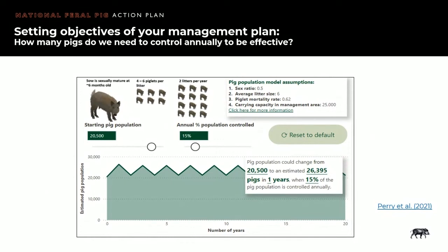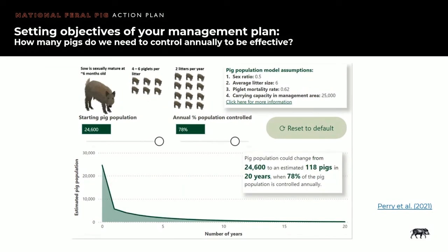Work done as part of the National Environmental Science Program developed a dashboard that brought together all data collected into an easy-to-use platform for Indigenous rangers to support their management programs. This work focused on protecting turtle nests from predation by feral pigs, wild dogs and goannas. These figures provide a terrific visual depiction of what's needed to make a control program effective. If only 15% of the population is removed per year, the population increases. In contrast, when 78% of the population was removed annually, modelling showed the population would be reduced to 118 pigs over a 20-year period. While this is the direction we're aiming for with the plan, it won't be easy, especially when we don't really know how many pigs are in a local environment.